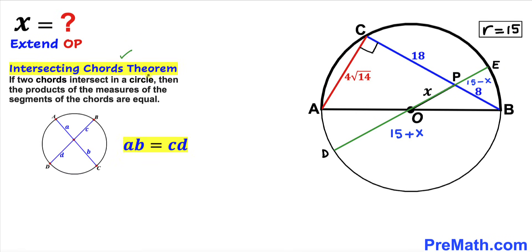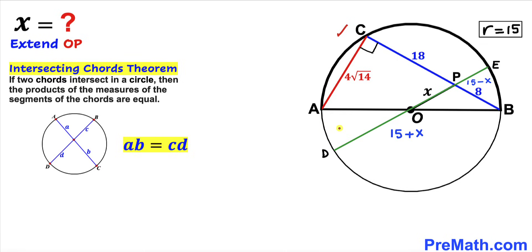Now let's recall the intersecting chords theorem: if two chords intersect inside a circle, the products of their segments are equal, giving A × B = C × D. In our diagram, chords CB and DE intersect at P. Labeling the segments: A = 18, B = 8, C = 15 − x, and D = 15 + x.